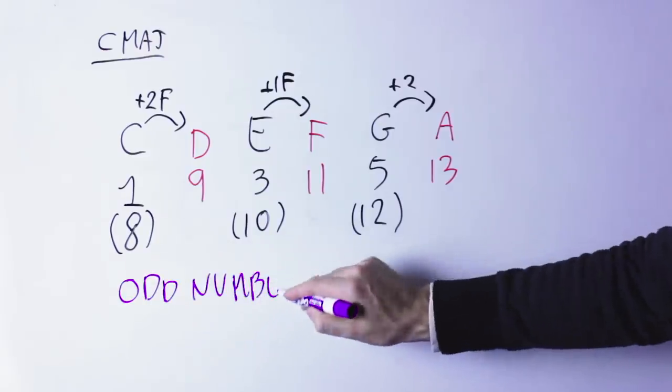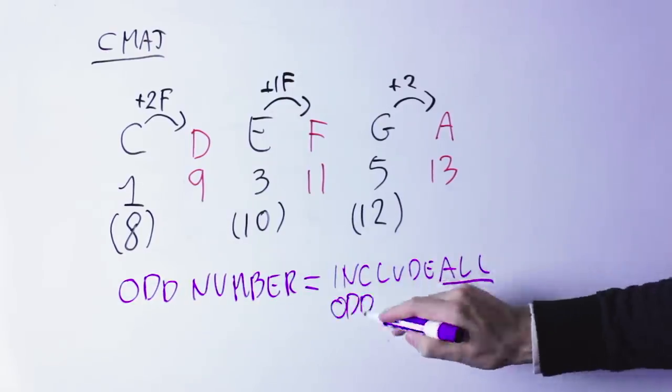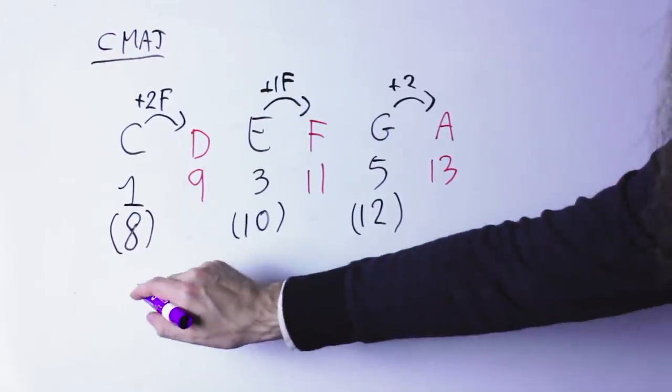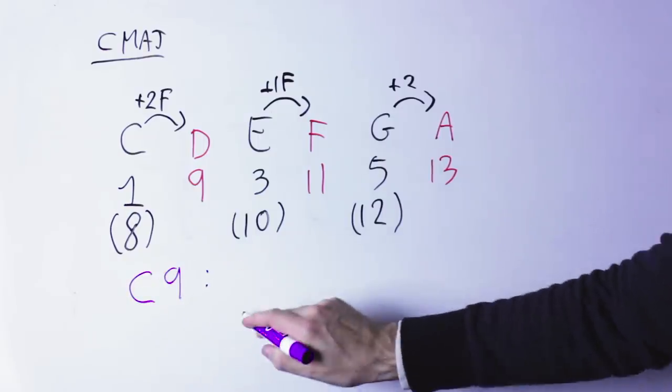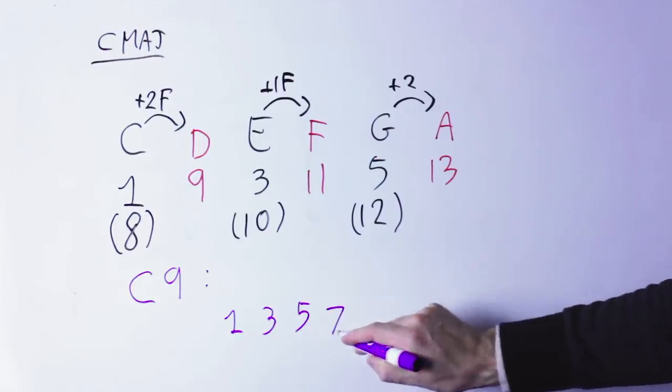here is the rule. If you only have an odd number, like C9, this means that you have to include all the odd numbers up to that. So on the C9, you include one, three, five, seven, and nine,